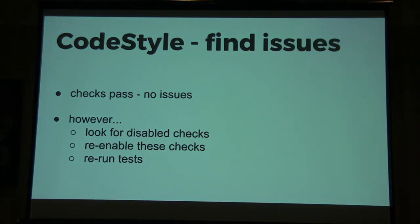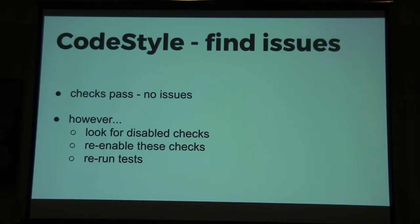The idea to find issues there is: normally we have these auto-checks and they all pass, so the code in theory should be clean. But in some cases we disable checks, especially in the PHP CodeSniffer, because the code evolved and at some point we decided on coding styles, but big parts of the code do not match these coding styles yet and no one took the time to fix them. That is where you can find issues — look for checks that are disabled, enable them, run the tests, see the issues, and fix them.